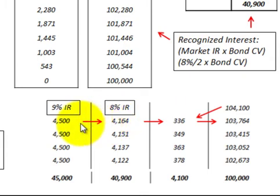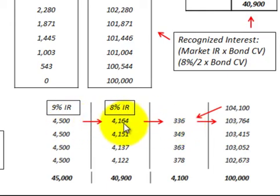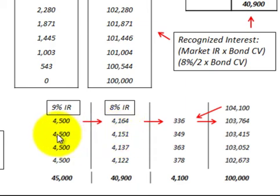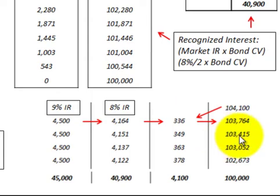Subtracting this interest revenue from the interest payment received, we calculate the premium to bonds receivable amortization — in this case $336, the difference between $4,500 and $4,164. We subtract that premium from the carrying value, reducing it each period. For the next period we use the new carrying value times 4% to calculate interest revenue, subtract it from $4,500 to get the new premium amount, and subtract that from the previous balance. We continue this process until the bond is amortized down to $100,000 at maturity.